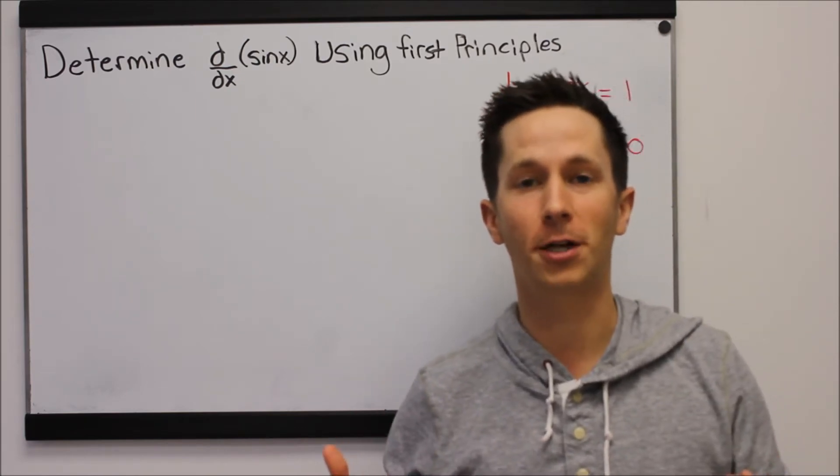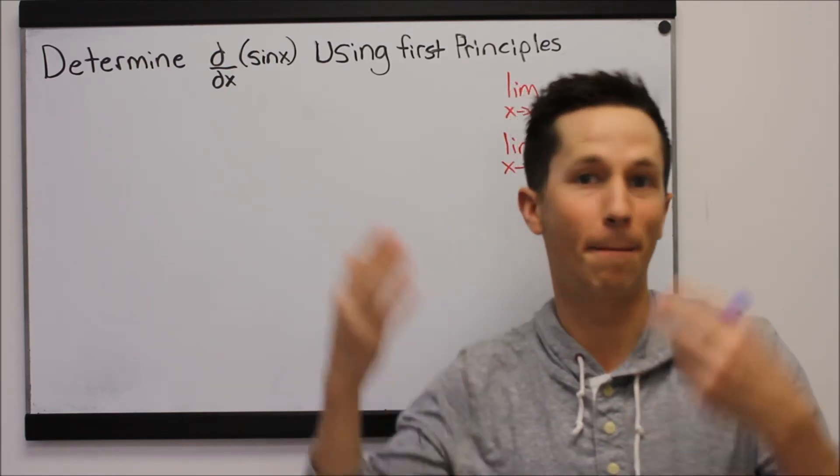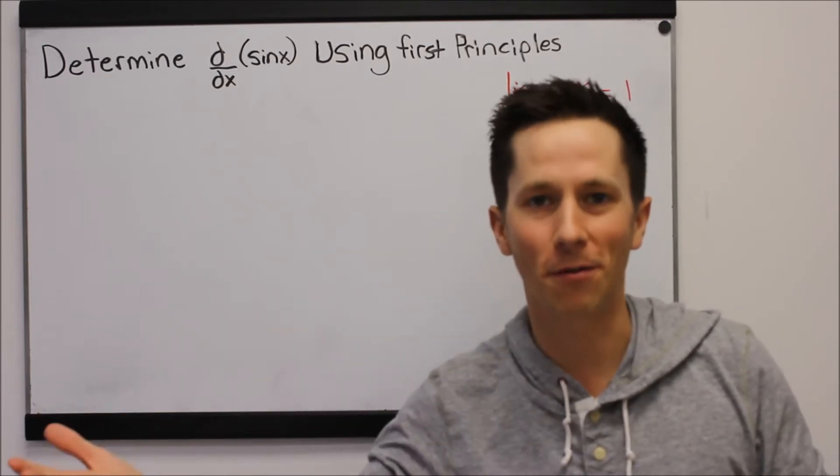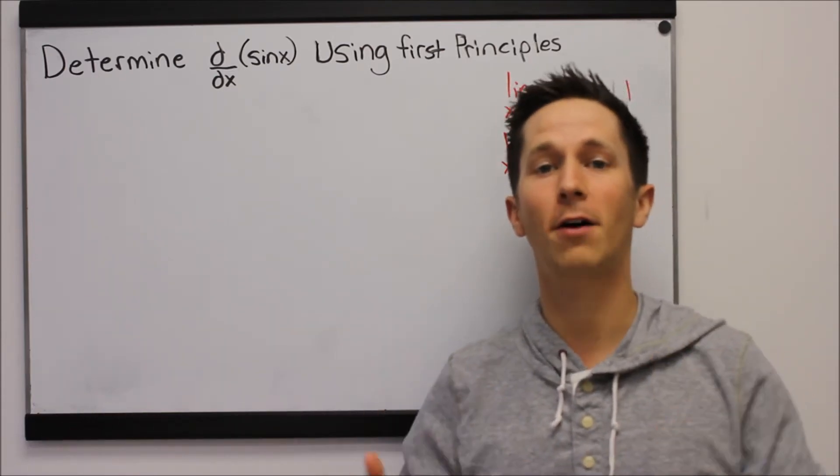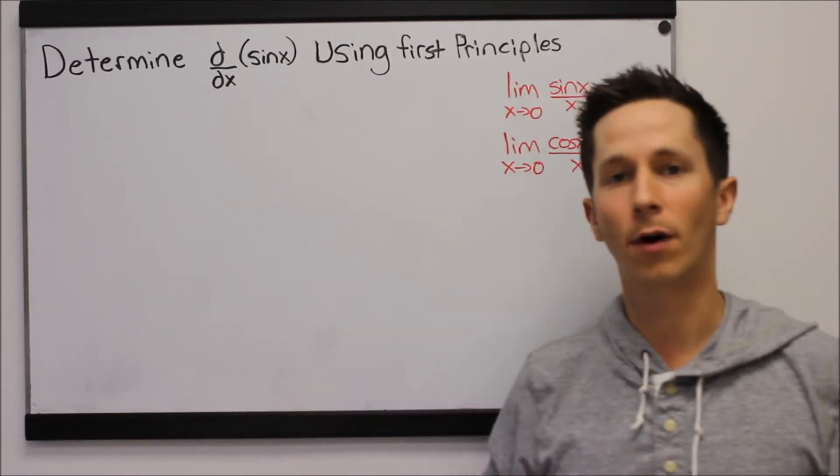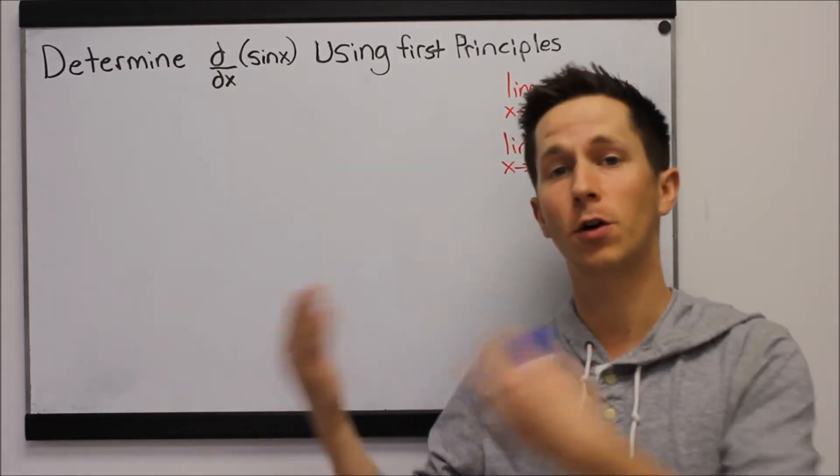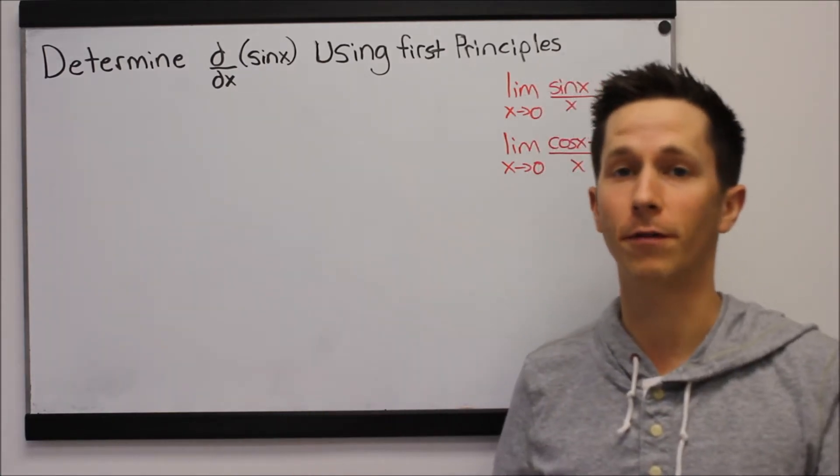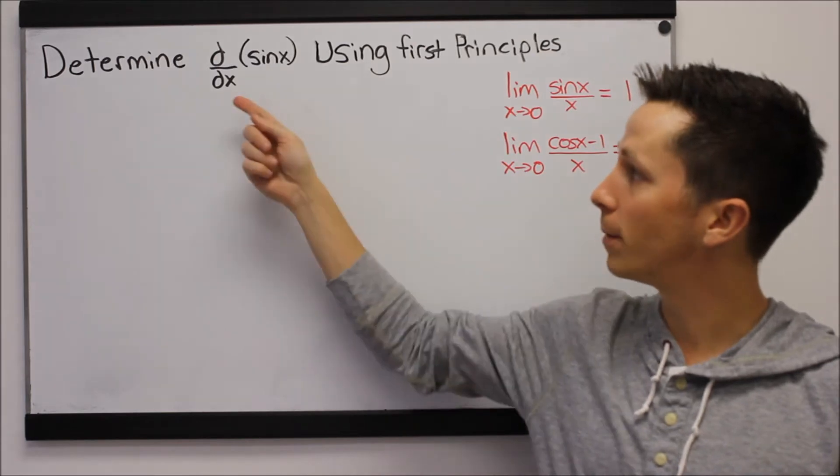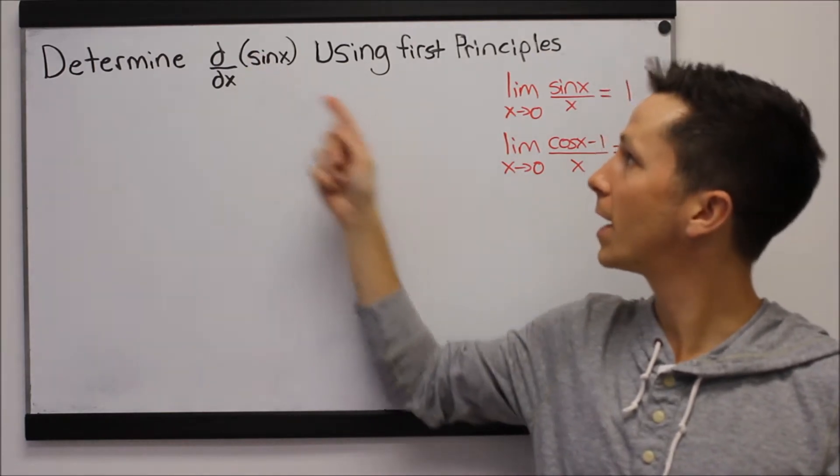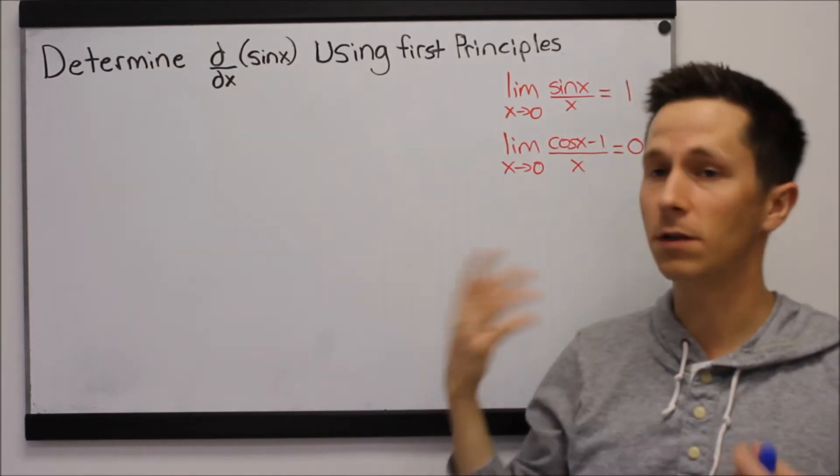So we learn that often in trigonometric derivatives by memorizing a table. Essentially we know that the derivative of sine x is cos x, but how do we prove and show that? Well anytime we have to prove a derivative we always go back to the definition of the derivative. So this question says determine the derivative of sine x with respect to x using first principles.